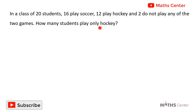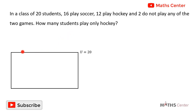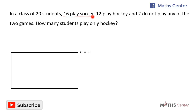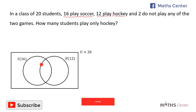This is a two-set problem, so we first represent the information on a Venn diagram. We use a rectangle to represent the total number of students in the class, which is 20. One circle represents the 16 students who play soccer, and another circle represents the 12 students who play hockey.